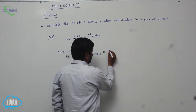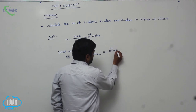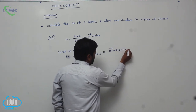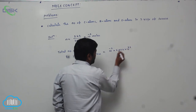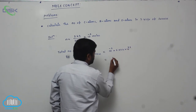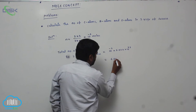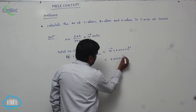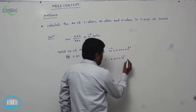that is 10 power minus 2 into 6.022 into 10 power 23. It becomes 6.022 into 10 power 21 total molecules.